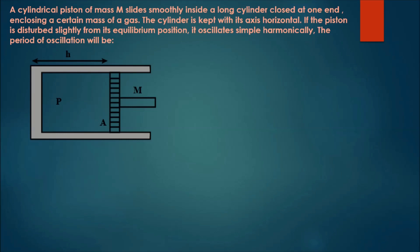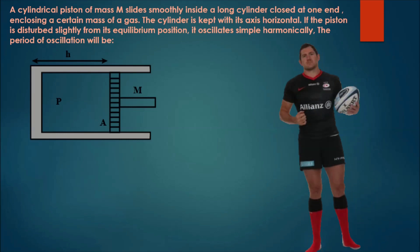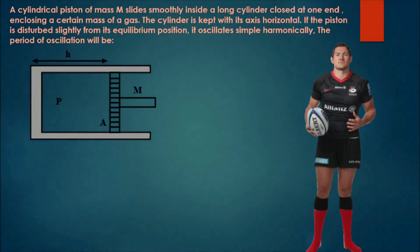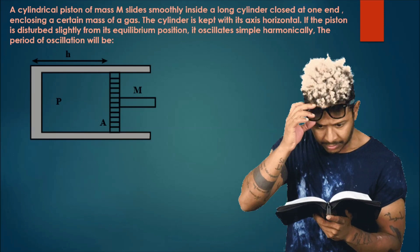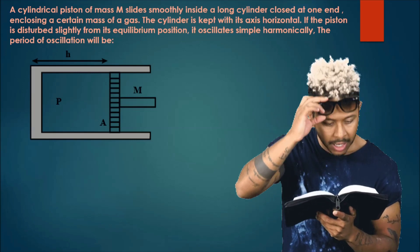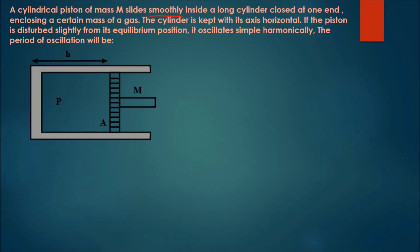Hello everyone, welcome to Example of Physics. This question is on the topic of oscillation and a little bit of thermodynamics. The question says: a cylindrical piston of mass m slides smoothly — that means there is no friction — inside a long cylinder enclosed at one end, enclosing a certain mass of gas. The cylinder is kept with its axis horizontal. If the piston is disturbed slightly from its equilibrium position, it oscillates simple harmonically. Find the period of oscillation.